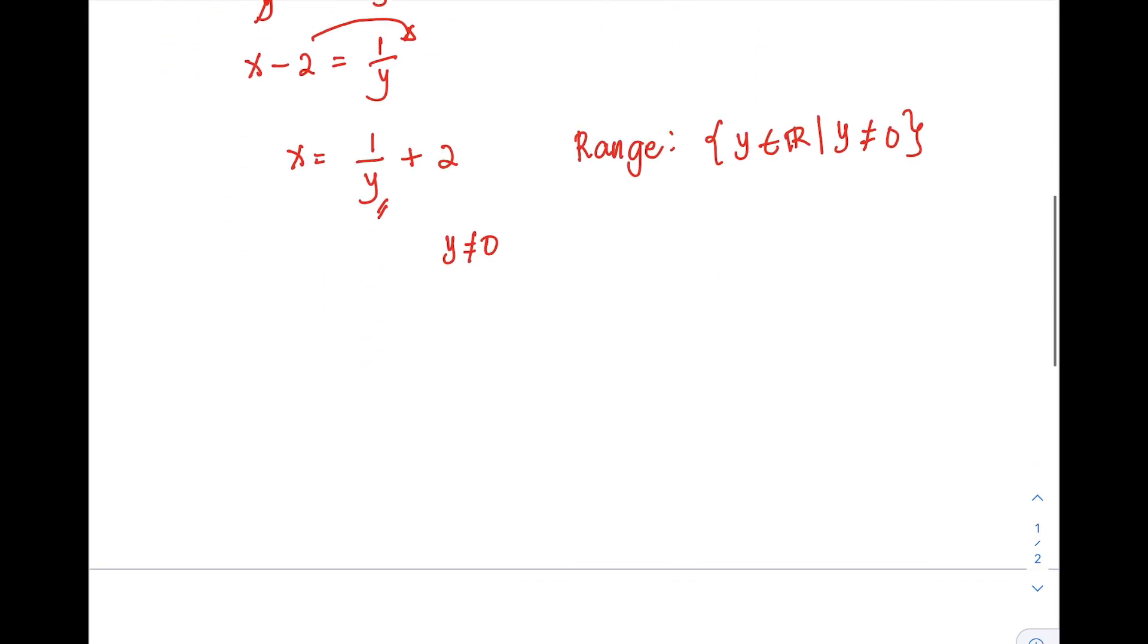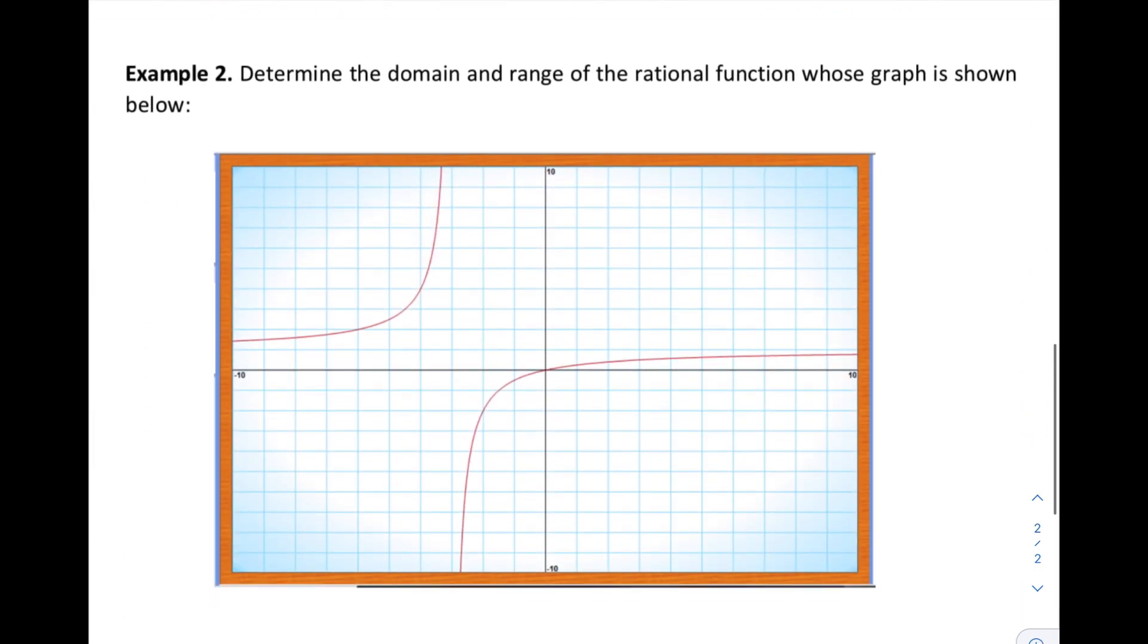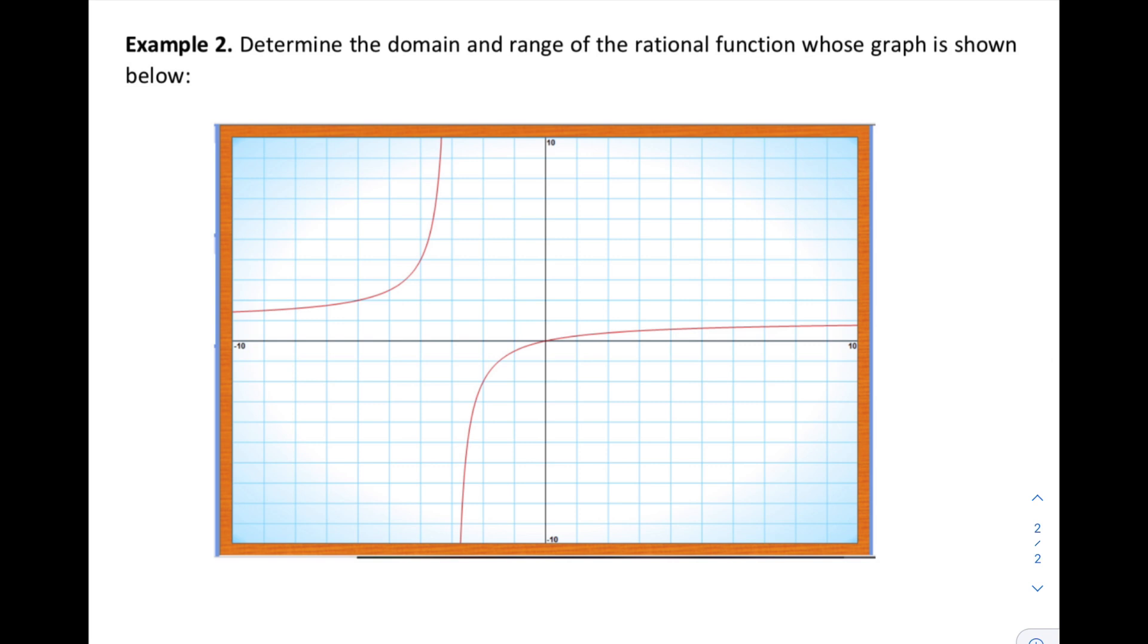So next, let's have example number 2. Determine the domain and range of the rational function whose graph is shown below. So here, what you'll do is observe the graph. So normally, to identify the domain, what you'll do is observe the x values. You'll find at which point on x the graph doesn't cross. Then, as you notice, on the left side of our Cartesian plane,